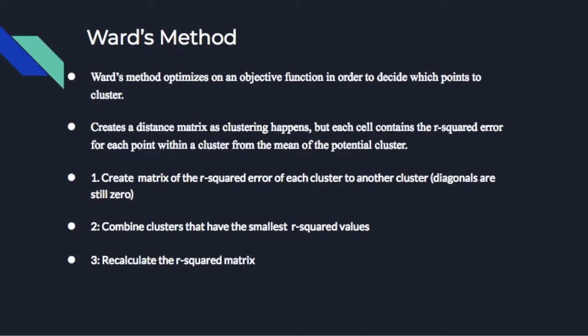Another example of agglomerative clustering is a method called Ward's method. Ward's method optimizes on an objective function in order to decide which points to cluster. The most common form of Ward's method minimizes the variance within each cluster — so instead of using the Euclidean distance, you minimize on the L2 norm. This finds the clusters that have minimum variance internally, clustering based on minimizing the distance between each internal point of each cluster.